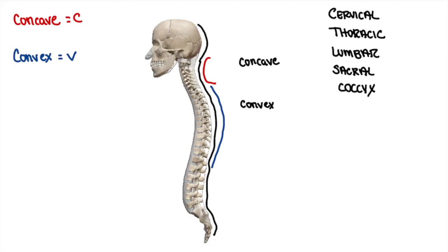Continuing our pattern of the spine's curvature, as we get to the lumbar region, we would see that it also has a C shape. So the lumbar region is concave posteriorly as well. Then our last segment, the sacral region, bows out just like the thoracic region did, so the sacral region is also convex. We can now identify the concave and convex curvature of each segment of the spine.